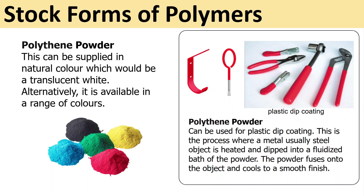Polythene powder can be supplied in natural color, which is a translucent white, or alternatively in a range of colors. Polythene powder can be used for plastic dip coating — a process where metal, usually steel, is heated and dipped into a fluidized bath of the powder. The powder fuses onto the object and cools to a smooth finish.